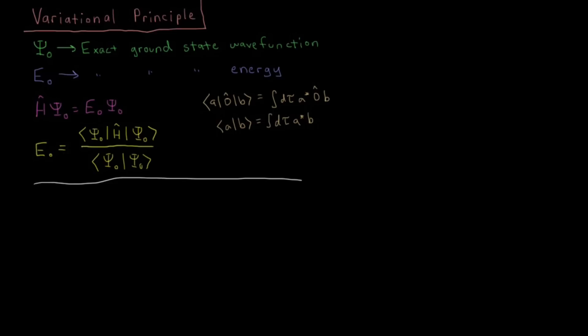To start off our journey into approximate methods for quantum mechanics, we're going to look at a concept called the variational principle. We have psi-naught here, which is going to be the exact ground state wave function. Note that this is the ground state, so the variational principle is only going to work for ground state wave functions — it will not work for excited states.